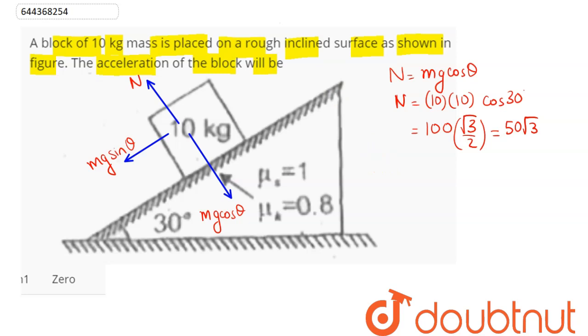Next we can find the value of the limiting friction which comes as mu s into n. Here mu s value is given as 1. Normal here is 50 root 3. Hence the maximum limiting friction is 50 root 3.